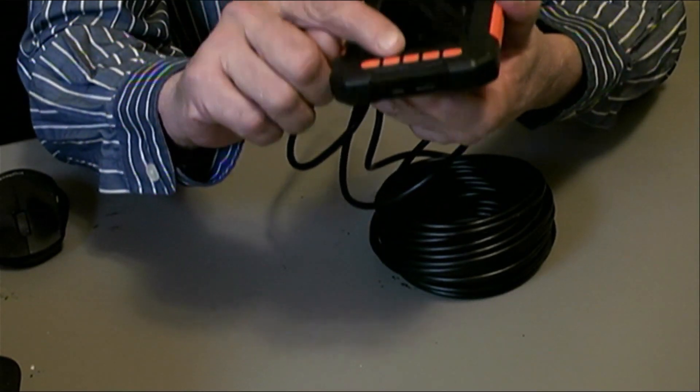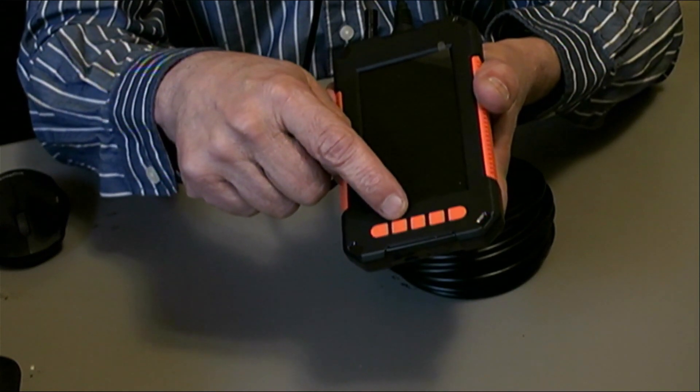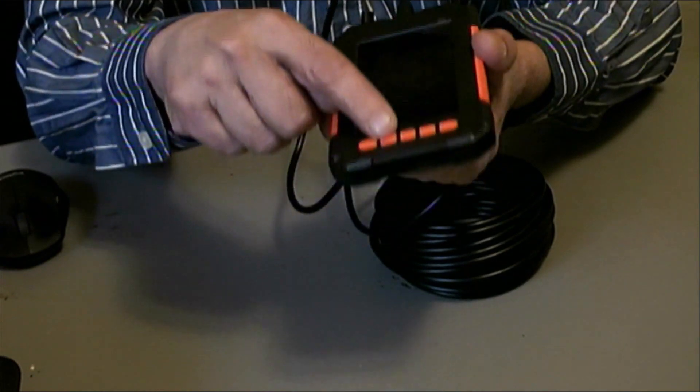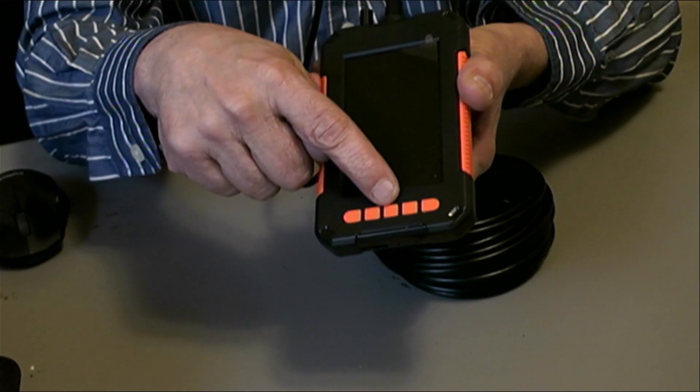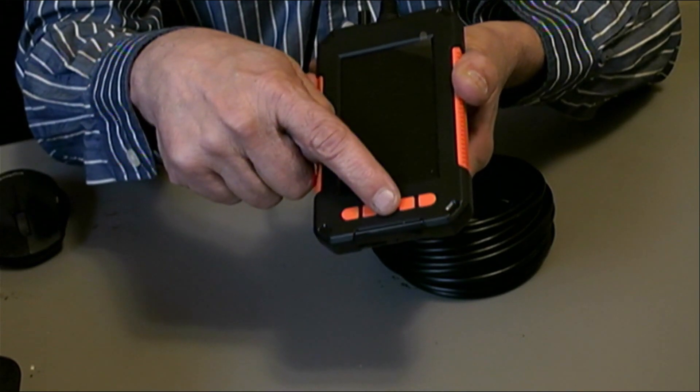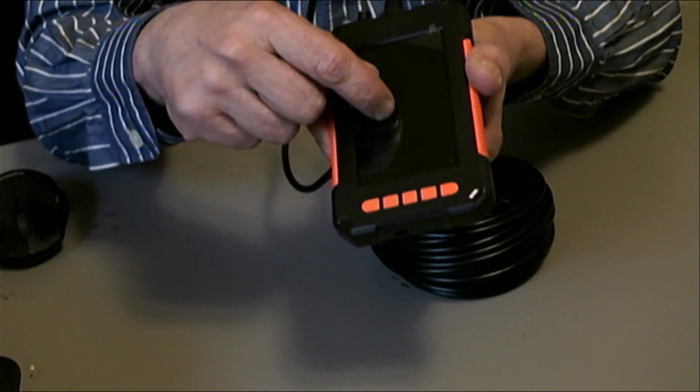This button here has to increase or decrease your light, the amount of light coming out of the end of that camera lens. And this is your OK button. You can mash it. And you've got to hold it for about three seconds before this device turns on.